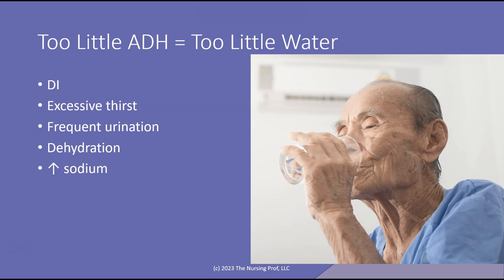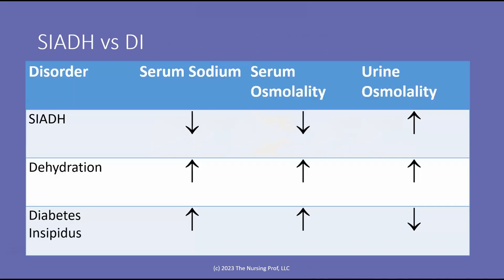Too little ADH is also called diabetes insipidus. The symptoms include excessive thirst, frequent urination, dehydration, and an increase in sodium. If you have an intact thirst mechanism, you will not end up having diabetes insipidus — you're going to drink. Because there's not enough anti-diuretic hormone, you're going to be diuresing a lot, and drinking a lot too, which can lead to other problems. But as far as water balance goes, too little ADH equals too little water.